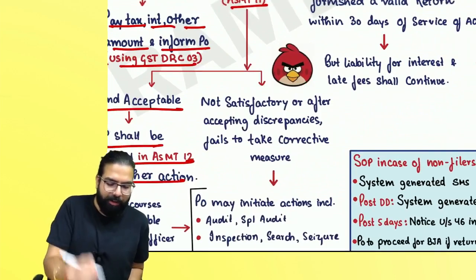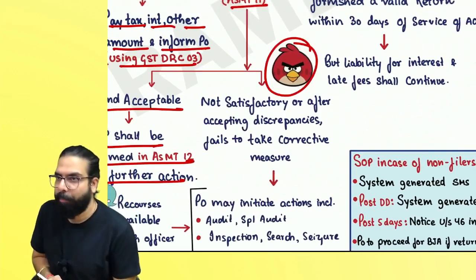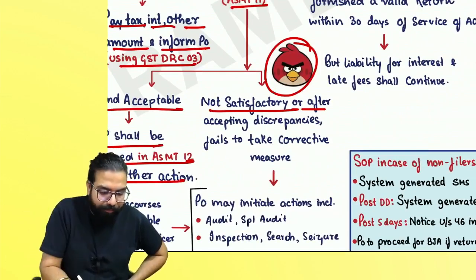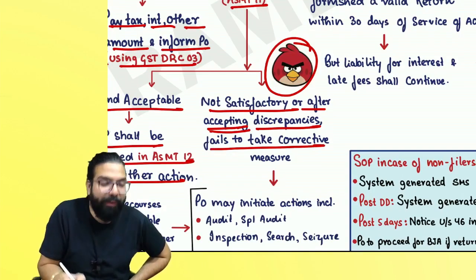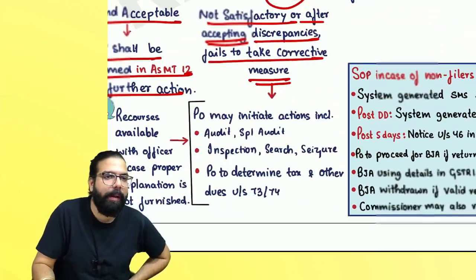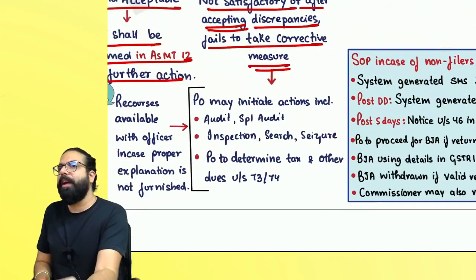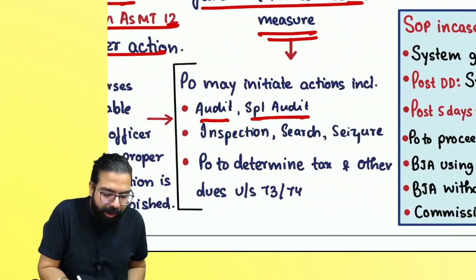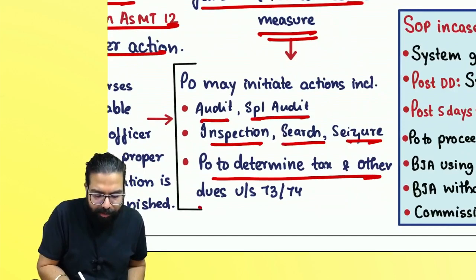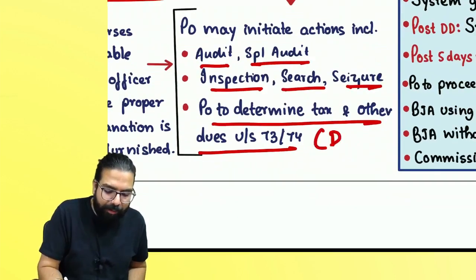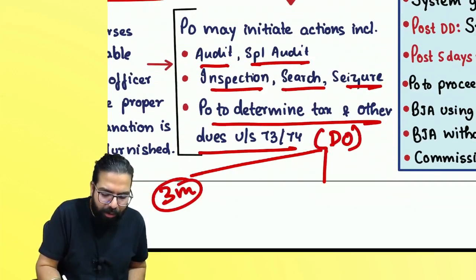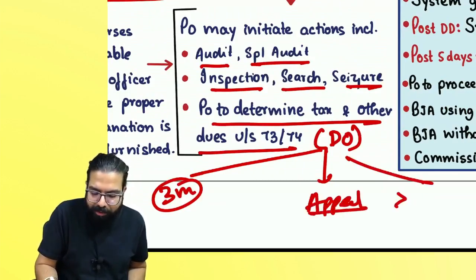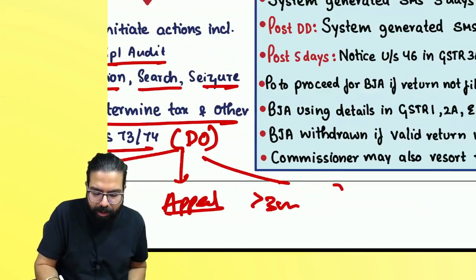But if he does not like your explanation, or after accepting the discrepancy you failed to take corrective action — meaning you have not made the payment — the officer will get angry and take action against you. That action includes audit, special audit, inspection, search, seizure, and he will go ahead and determine the tax under sections 73 and 74, issuing a demand order. Payment of the demand order should be made within three months, or go for an appeal within three months; otherwise, after three months, recovery will start.